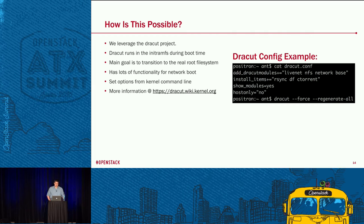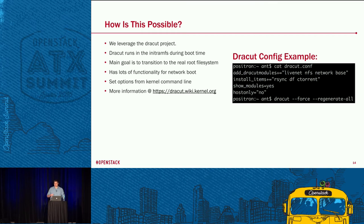How is this possible? We're leveraging the Dracut project. It runs on the initramfs during boot, and its main goal is to transition to the real root filesystem. It has lots of functionality for retrieving the rootfs over the network with HTTP or FTP. We recently added torrent support so you can point to a rootfs torrent and retrieve it that way, which is really useful when you boot a lot of servers at once. There are many tunable options that can be set via the kernel command line to control boot behavior.